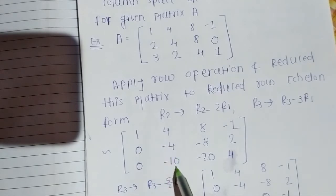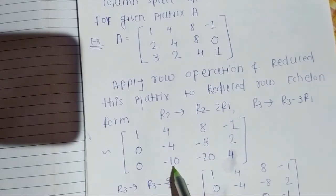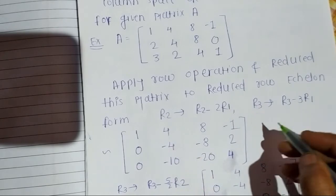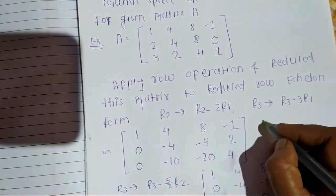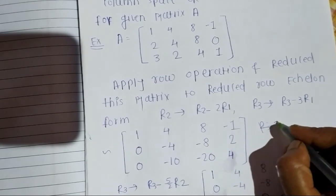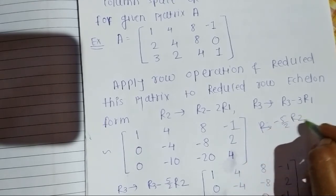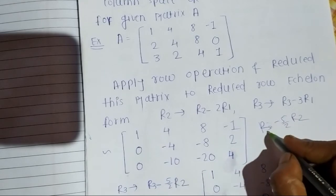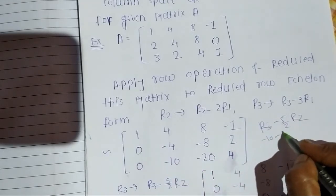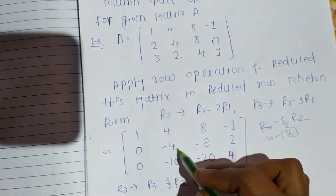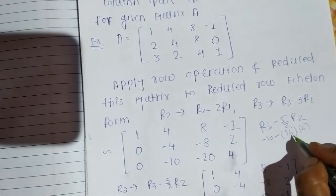Now the first diagonal below element is zero. Next we want the second diagonal below element to be zero. We multiply the second row by -5/2 and subtract from R3: R3 → R3 minus (5/2)×R2. So (5/2)×(-4) = -10, which gives us zero in that position.